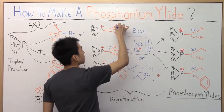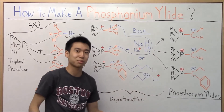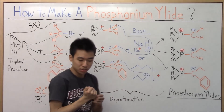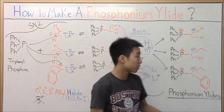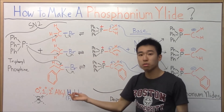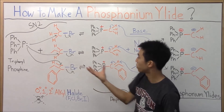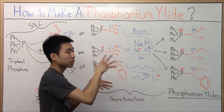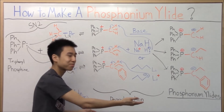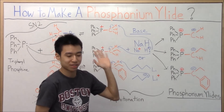We have our phosphonium ylids at last. Just a quick recap: in order to get phosphonium ylids, you need to do an SN2 reaction first with either a superprimary, primary, or secondary alkyl halide to produce whatever type of phosphonium ylid you want at the end. Then to make it an ylid, you do a deprotonation with a base, and then we're done.